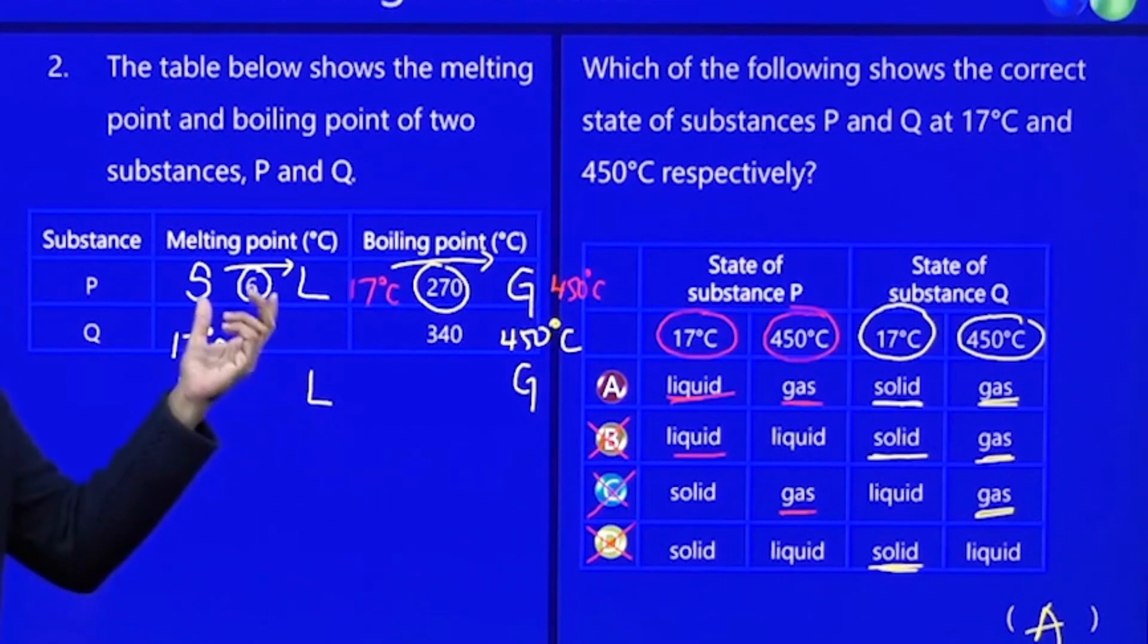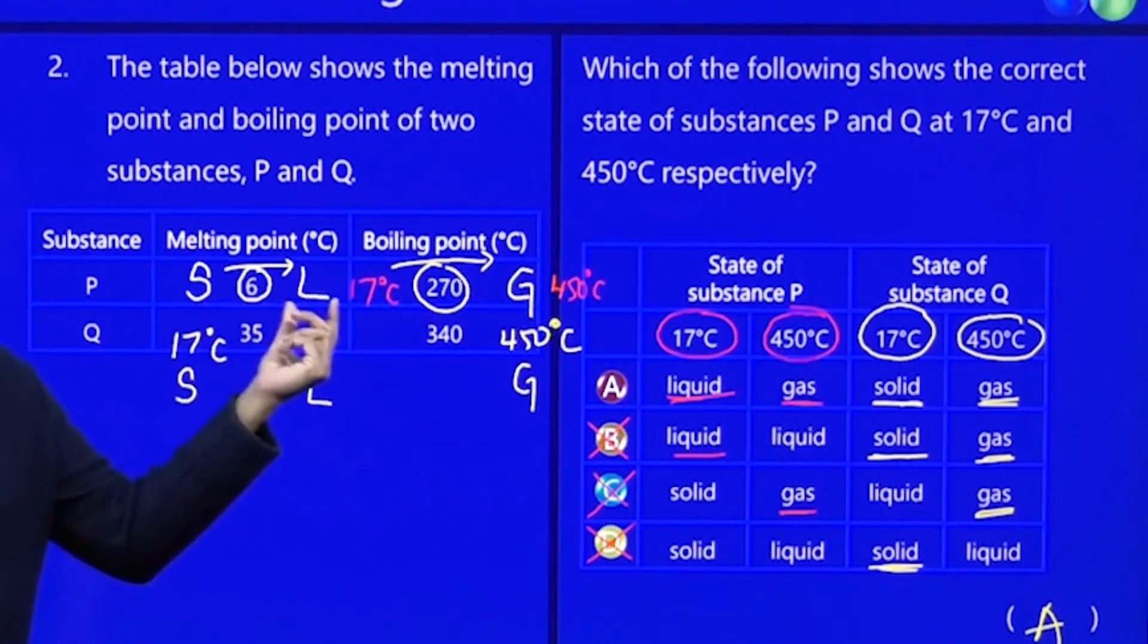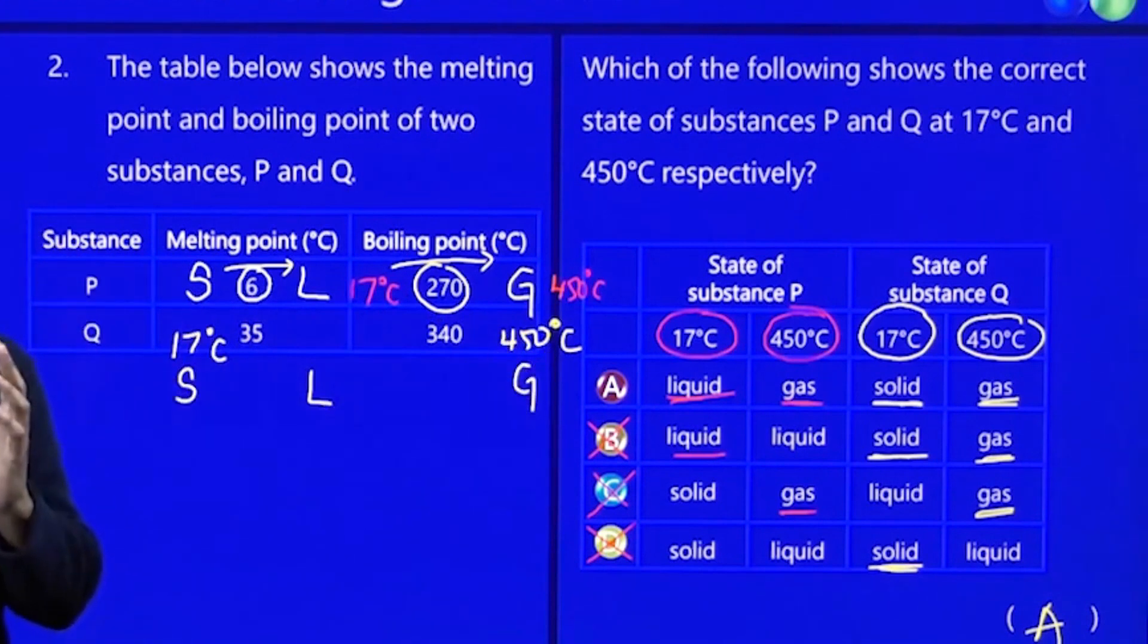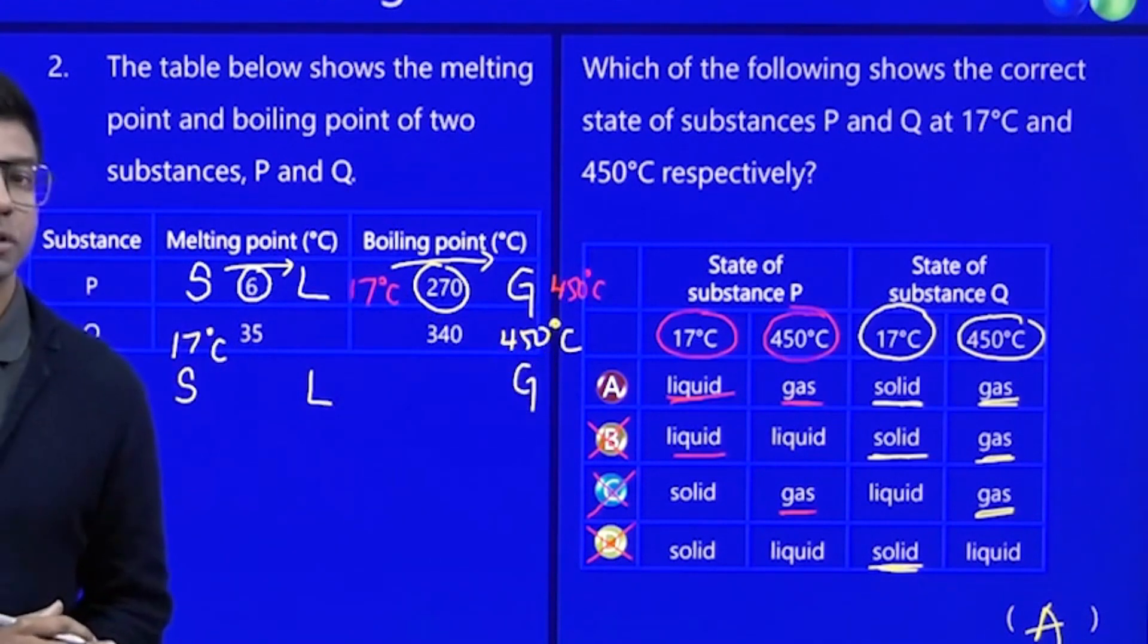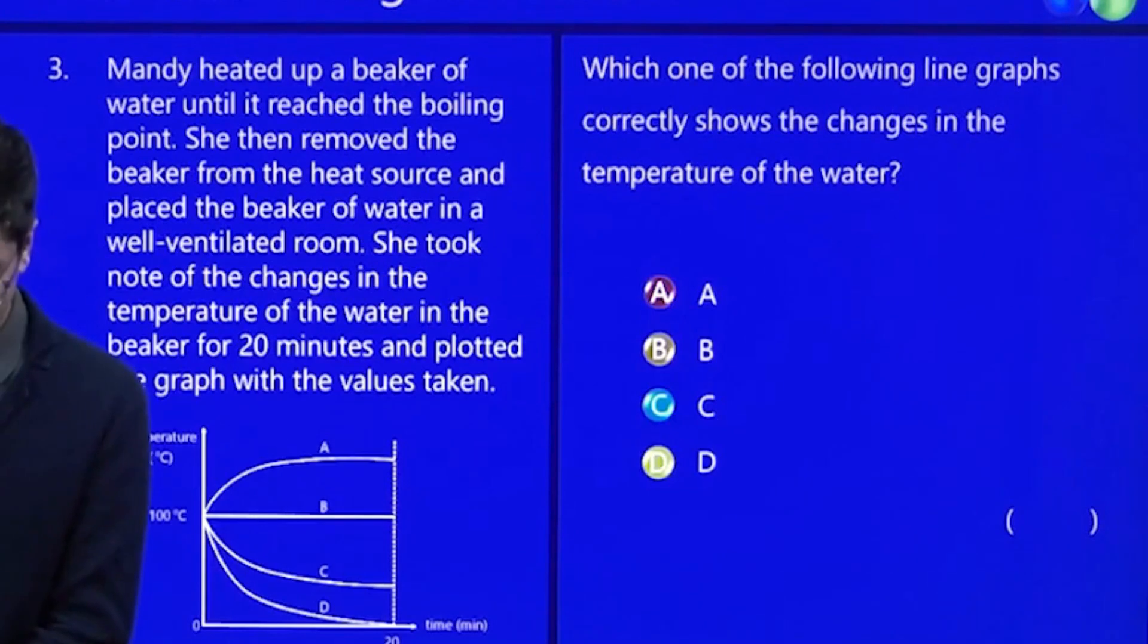So this is a very easy way, especially when they give you melting and boiling point. You need to figure out where is the solid zone, liquid zone, gas zone. Go for zones. And you check the temperature in those zones and you will find out the states of matter in those zones.